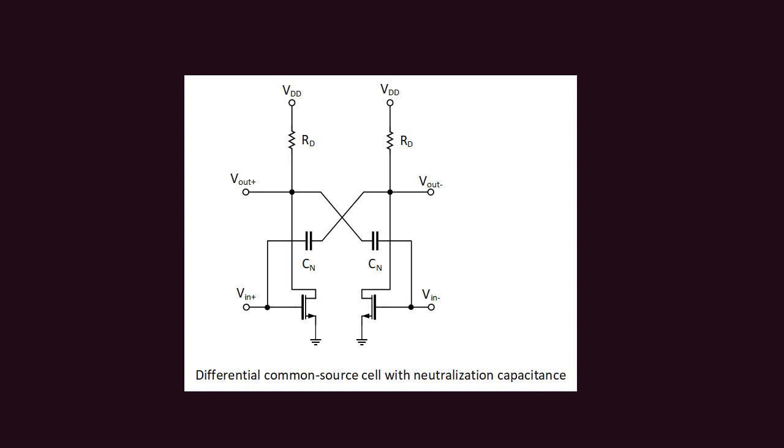What this block essentially is: it is a differential amplifier. Here we can see in the figure there are two transistors and the input signal represented by Vn+ Vn-, output Vout+ Vout-, and it is biased through a supply Vdd and Rd is the load resistance.